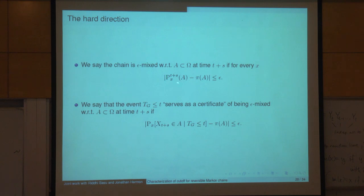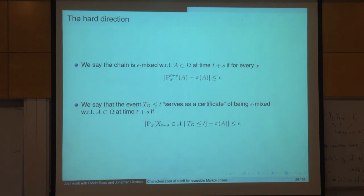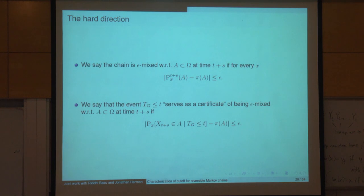We want to control the distance in total variation between the chain and the stationary distribution. We're going to get epsilon mixing by finding a certificate: a very large set G such that if we hit G by time little t, then we're very likely to be mixed by time t plus s, all with respect to a set A.